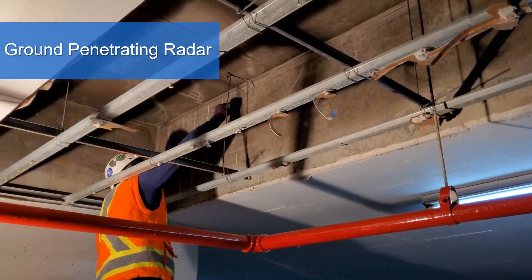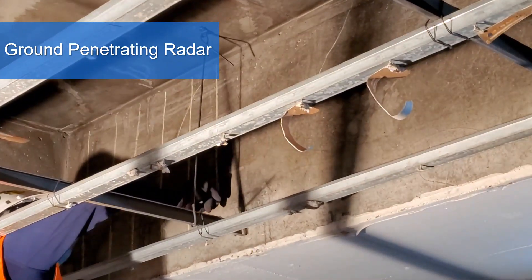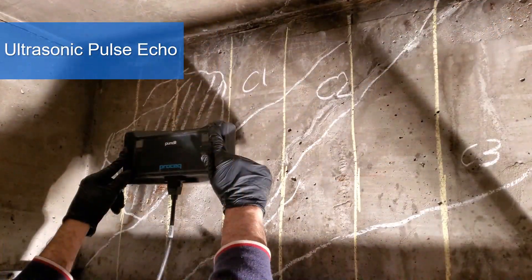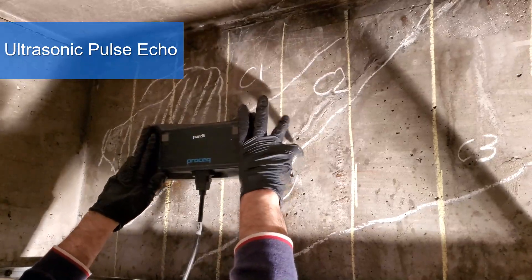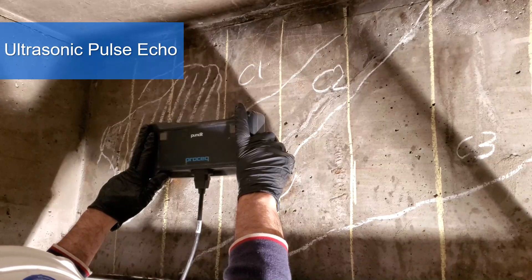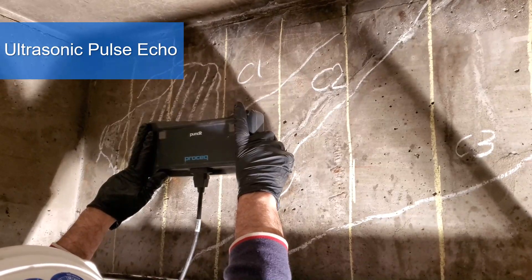How about concrete thickness in elements with one side access only? Examples can be the beam I showed you earlier, retaining walls, or the walls in a concrete tank. Ultrasonic pulse echo can be used to evaluate the thickness of existing elements.